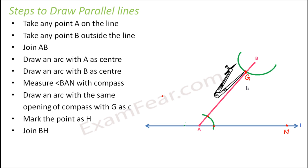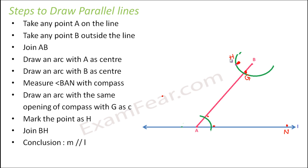And then you mark this point as H. So which point would be H? This point which is marked by the compass is point H. So this is point H. Now once we have marked H, what is our next step? We join BH.